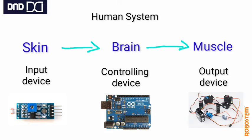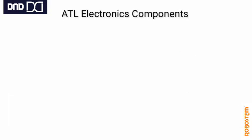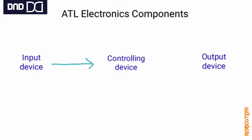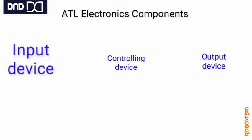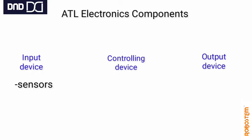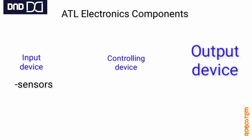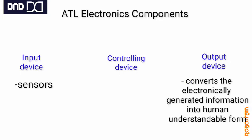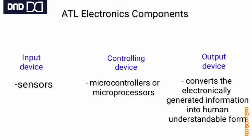The controlling device can be an Arduino Uno, Nano, or any microcontroller. There are many output devices that you will come to know in this series. Input devices are many in number — sensors are many — but output devices are limited. Output devices can be motors, a display, a buzzer, or a laser diode. Controlling devices are microcontrollers which process the data and whatever commands you have programmed — that is taken care of by the microcontrolling device.